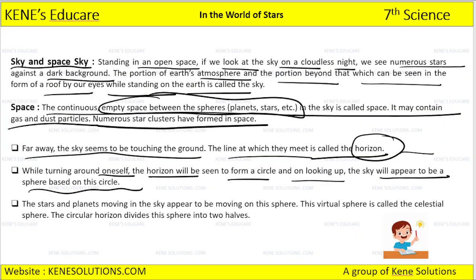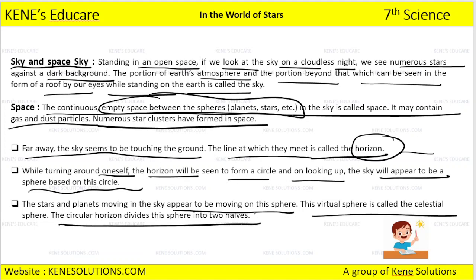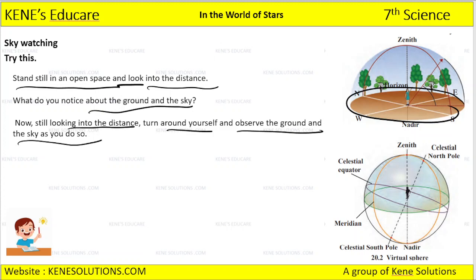The stars and the planets moving in the sky appear to be moving on a sphere. This virtual sphere is called the celestial sphere. The circular horizon divides the sphere into two halves. You can see the terms here: celestial north pole, celestial south pole, meridian, and celestial equator.